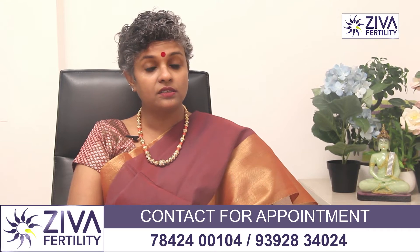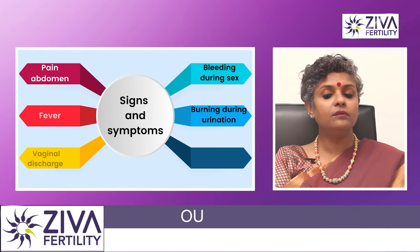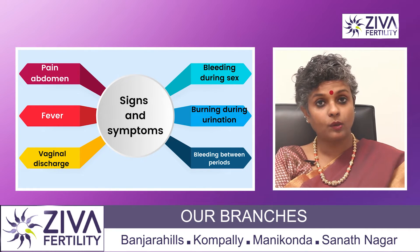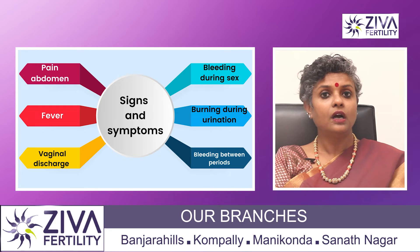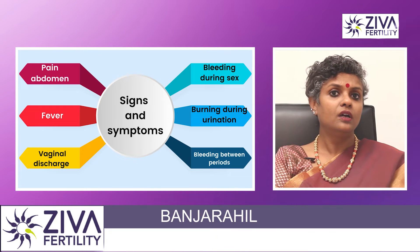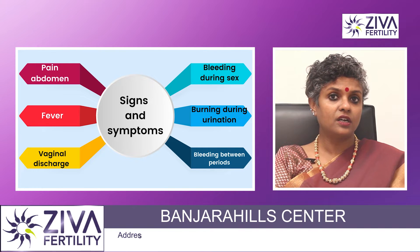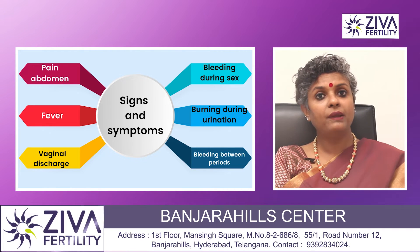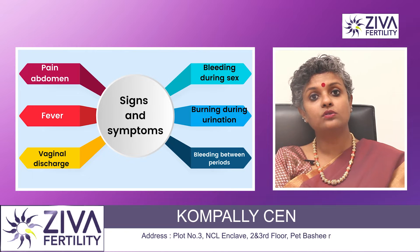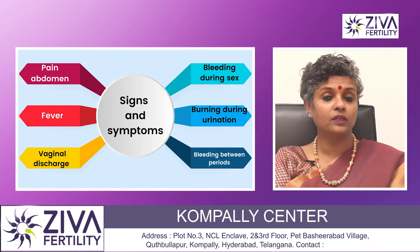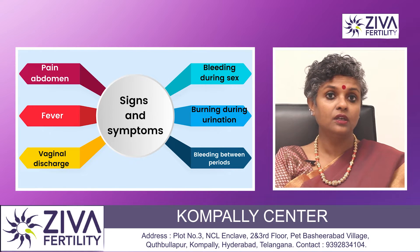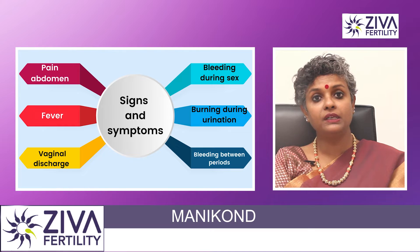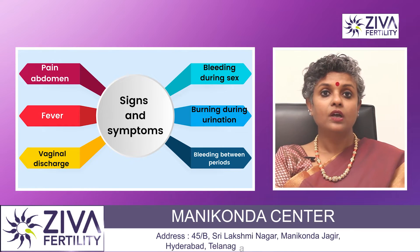What are the signs? The most important sign is pain in the abdomen — lower abdomen — fever, unusual vaginal discharge with an odour, pain and bleeding during intercourse, burning during urination, and intense bleeding between periods. These are the symptoms.